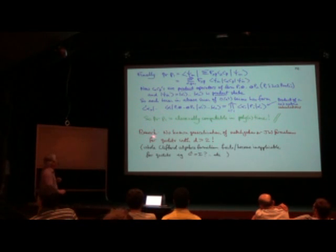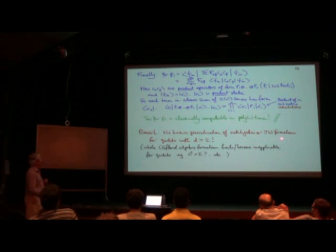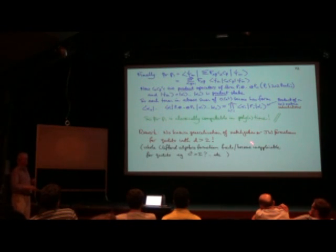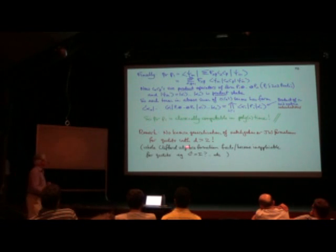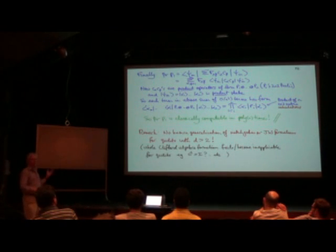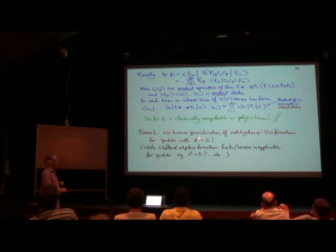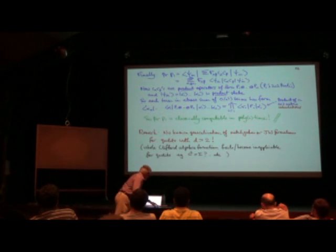A curious remark: qubits are special here. There's no known generalization of the Jordan-Wigner formalism to any dimension other than 2 — not even 3. The whole Clifford algebra formalism and things squaring to the identity collapses if you try to increase dimension. So I don't know of any generalization of this to qudits higher than d=2, unlike the Clifford stuff which works fine for all dimensions.